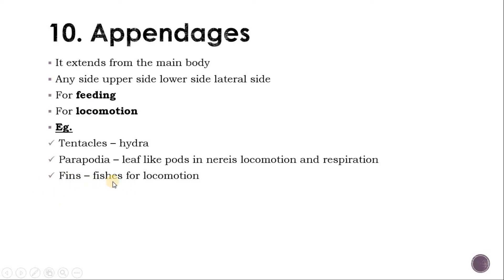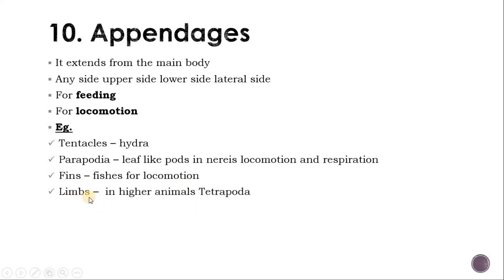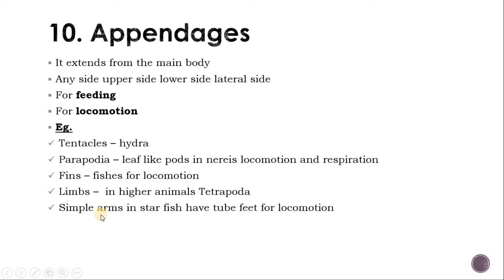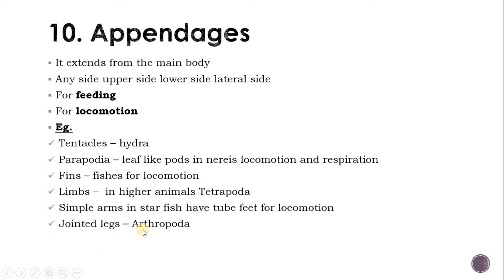Another appendage is fins in fish, used only for locomotion. Limbs are found in higher vertebrates and higher mammals — tetrapods have limbs for locomotion only. Simple arms are found in starfish with tube feet for locomotion and excretion functions. Jointed legs are found in Arthropoda. On the basis of these appendages we can classify the animals.